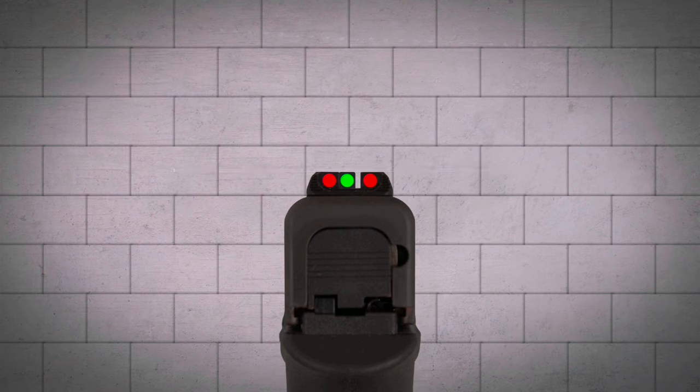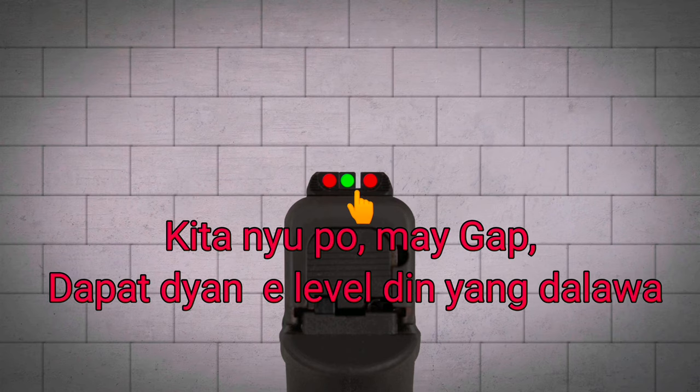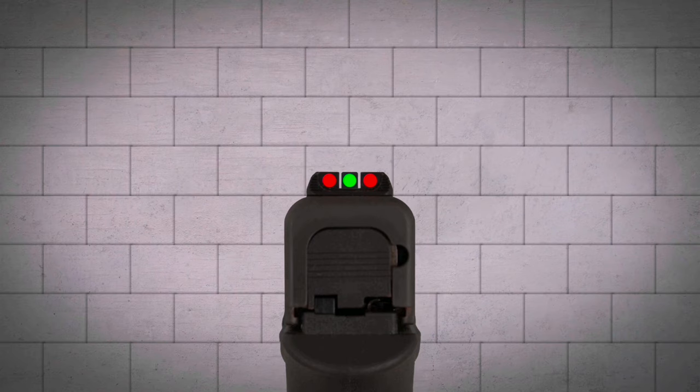On each side of your front sight post, there will be a gap of light between it and the rear sight. Move the front sight left or right until these gaps are the same width. This will ensure your rounds strike at a consistent windage.